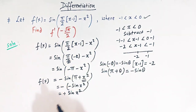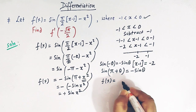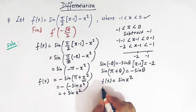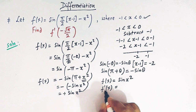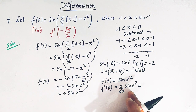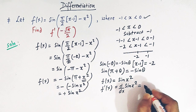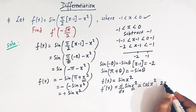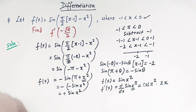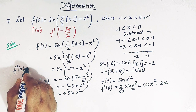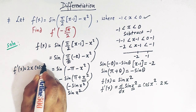The original function is now redefined as f of x equal to sin x squared. We can easily find the derivative: f prime of x equals d by dx of sin x squared. Using the chain rule, the derivative of sin x squared is cos x squared, and the derivative of x squared is 2x. So f prime of x equals 2x times cos x squared.